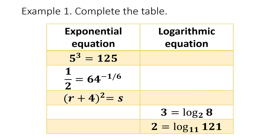For number 1, we have 5 cubed equals 125. In logarithmic form, this is equivalent to the exponent in the equation, which is 3, equals the logarithm of the answer to 5 cubed — that's 125 — logarithm of 125 to the base 5. So this is 3 equals logarithm of 125 to the base 5. This can be rearranged by reflexive property.